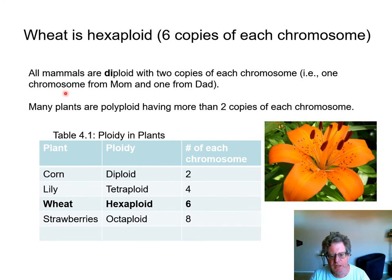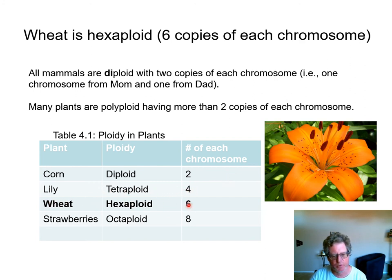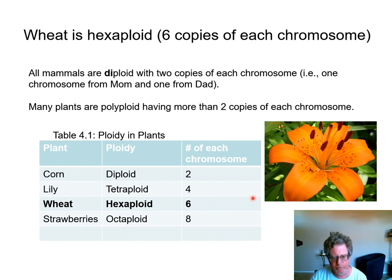The genetics of wheat is very interesting. All mammals and a lot of plants are diploid organisms — they get one chromosome from mom and one from dad. Many plants have more than two sets of chromosomes: lilies have four sets and are tetraploid, wheat has six sets and is hexaploid, and strawberries have eight sets — they're octoploid. So if you were a wheat plant, you'd get three copies of every chromosome from mom and three copies from dad.